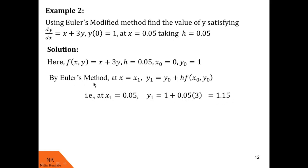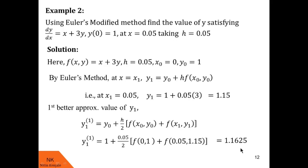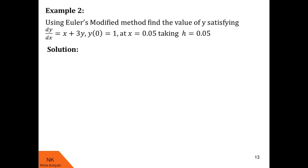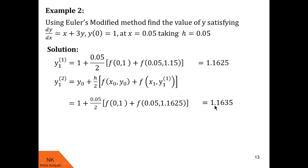Now we use Euler's modified method to get better approximate values of y1. The first better approximate value: y11 = y0 + (h/2)·[f(x0, y0) + f(x1, y1)]. Substituting y0 = 1, h = 0.05, x0 = 0, x1 = 0.05, y1 = 1.15, we get y11 = 1.1625. The second better approximate value: y12 = y0 + (h/2)·[f(x0, y0) + f(x1, y11)]. After calculation, y12 = 1.1635.